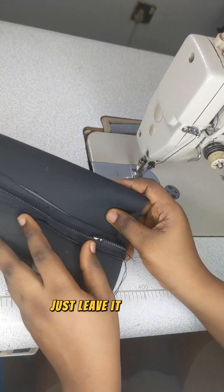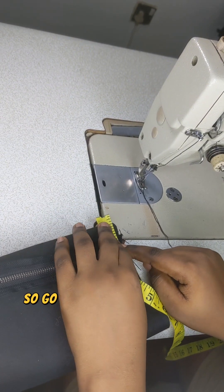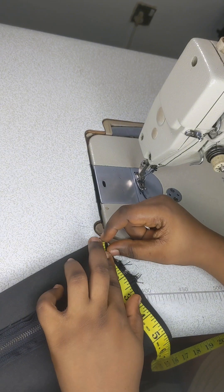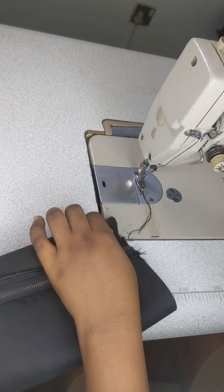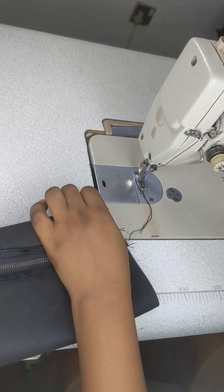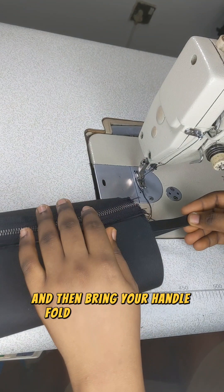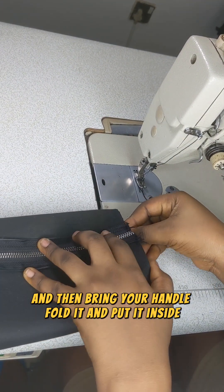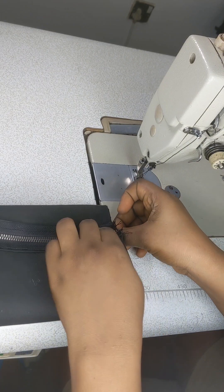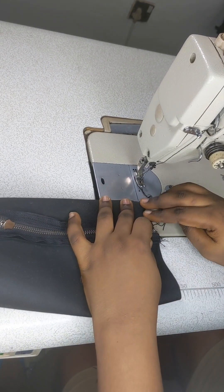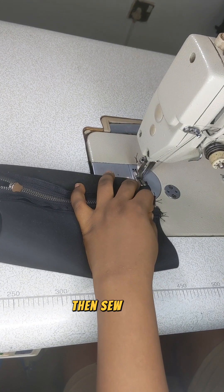Just leave it like that. So go higher, then fold and take two inches from the zip like this. So bring your handle, fold it and put it inside, then sew on it.